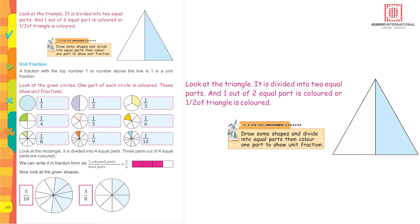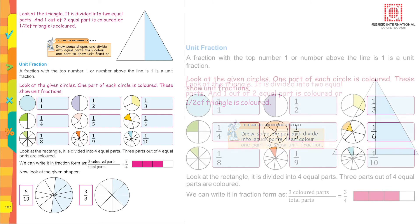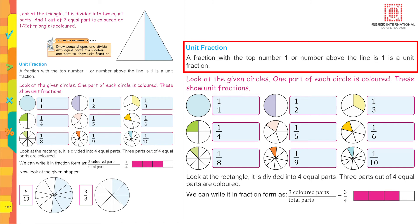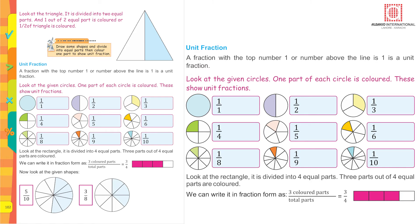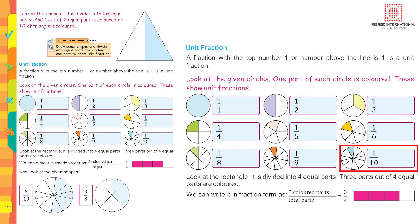Look at the triangle — it is divided into two equal parts and one out of two is colored, so half is colored. Unit fraction: a fraction with the top number one (the number above the line) is a unit fraction. The number at the top of the line is called the numerator and the number below the line is called the denominator. The given circles show unit fractions from one upon one through one upon ten.